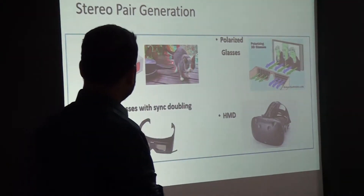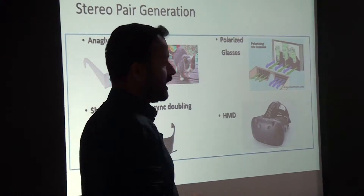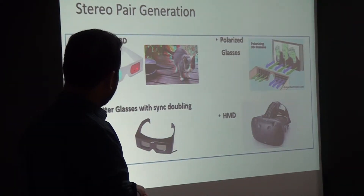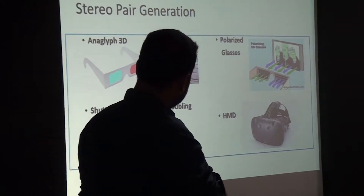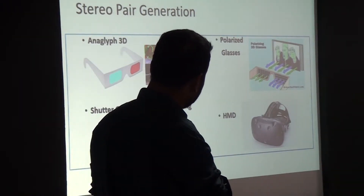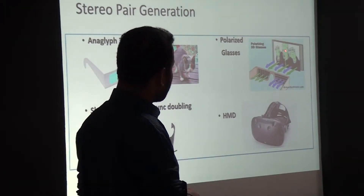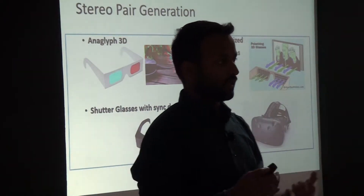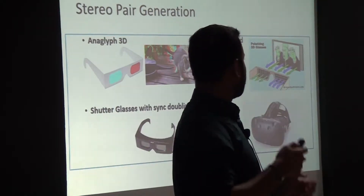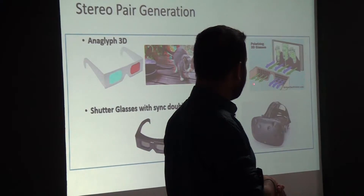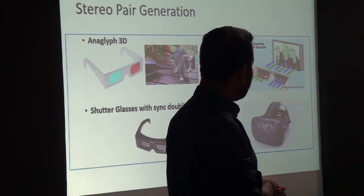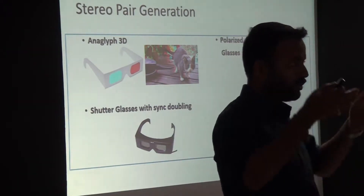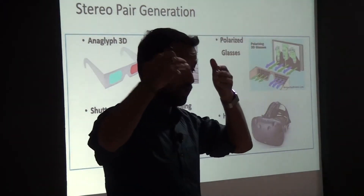There have been several attempts at stereo pair generation. You would have seen anaglyph 3D in your childhood — movies where one eye gets only blue images and the other gets only red images, with all edges going blue-to-red, and that's how you perceive depth. Another concept is polarized glasses, used in IMAX and movie theaters for films like Avatar, where polarized glasses let light with different phases pass through differently to each eye, creating stereo images in your brain.